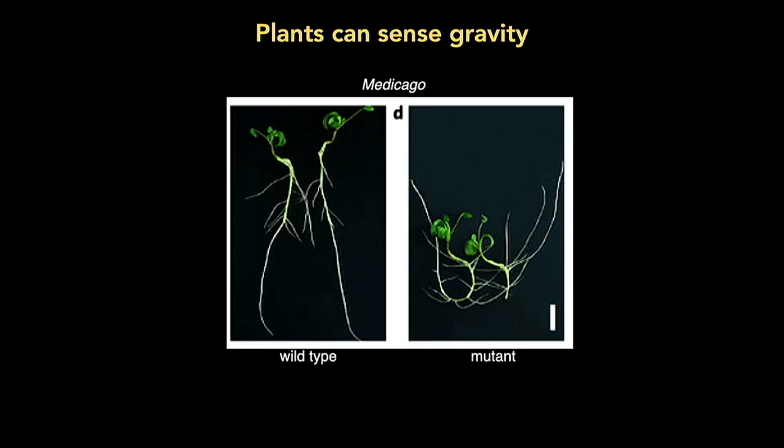Plants can sense gravity. We have mutants in Medicago, another model system. Normally roots go down and shoots go up, but these mutants have no idea where the ground is — they cannot sense the gravity vector. Basically the roots are growing all over the place.